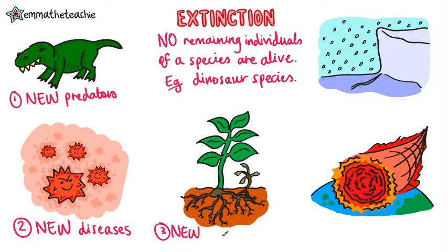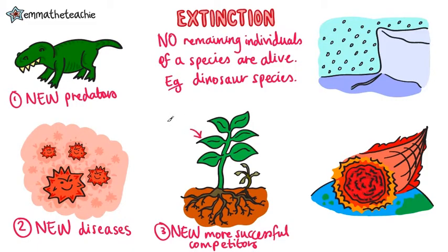Next up, there can be new, more successful competitors. If a new species competes for the same resources, such as food or space, then the old one may die out. In this case, the new plant gets all of the sunlight and all of the water, and so the old plant will instead die.